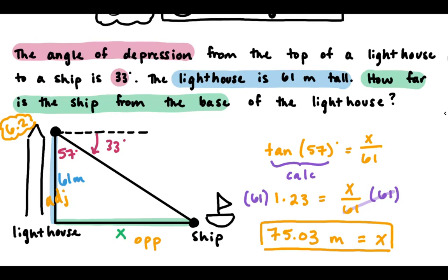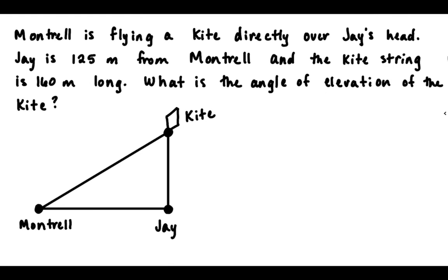Okay, let's scroll down to our last example. Montrell is flying a kite directly over Jay's head. Jay is 125 meters from Montrell, and the kite string is 160 meters long. What is the angle of elevation of the kite? Okay, let's read again and start labeling.